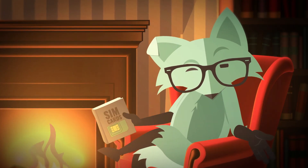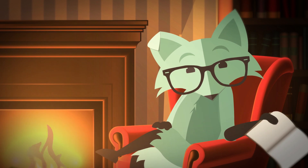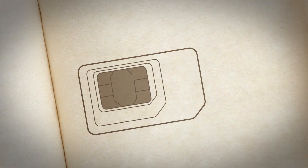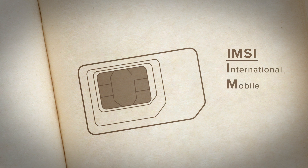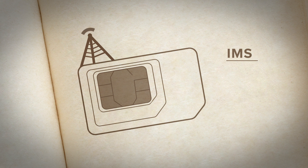So what all is stored on a SIM card? Not a whole lot actually. Your SIM card contains your IMSI, which is an International Mobile Subscriber Identity. This connects your card to your wireless carrier's network and lets the network know if you have an active account with that carrier.